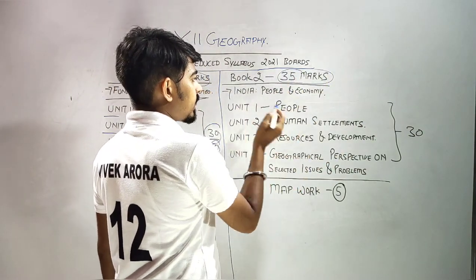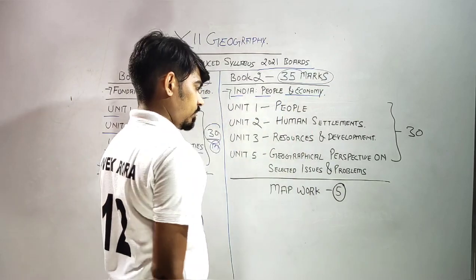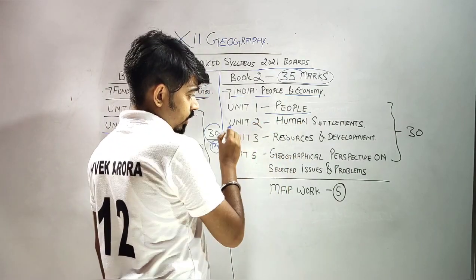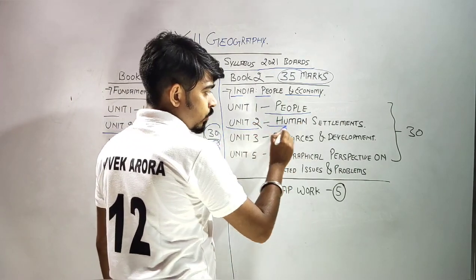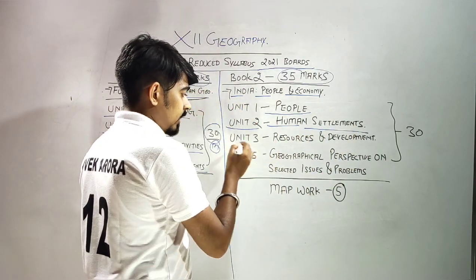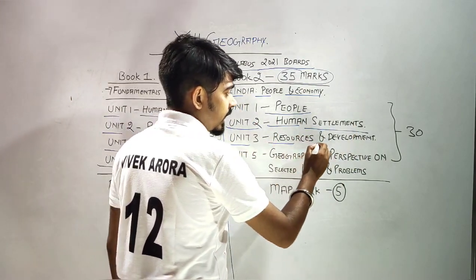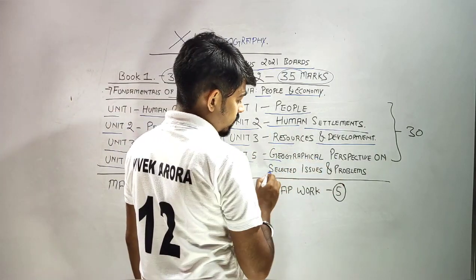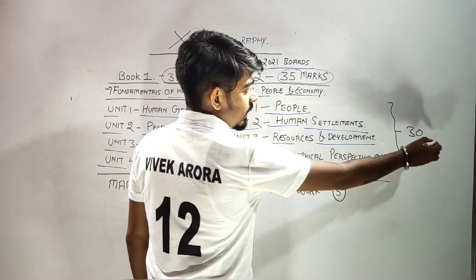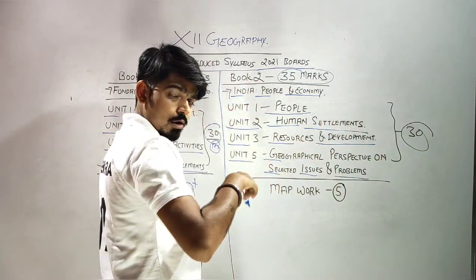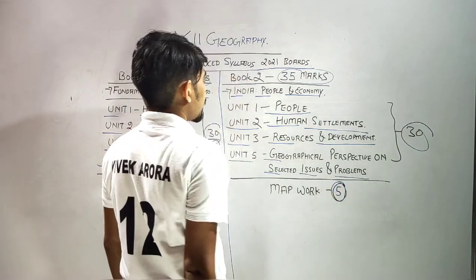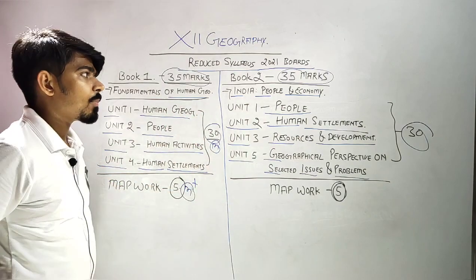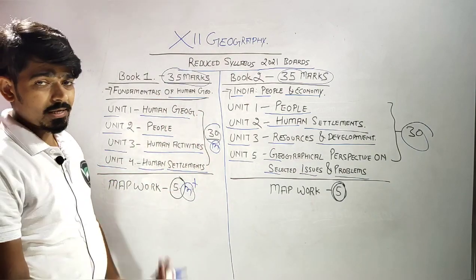Book number two भी 35 marks की है, इसका नाम है India People and Economy। इसमें Unit 1 - People, Unit 2 - Human Settlement, Unit 3 - Resources and Development, और Unit 5 - Geographical Perspective on Selected Issues and Problems। यहां भी 30 marks की theory और 5 marks का map है। कुल मिलाकर 70 marks का theory portion और 30 marks का practical होगा।